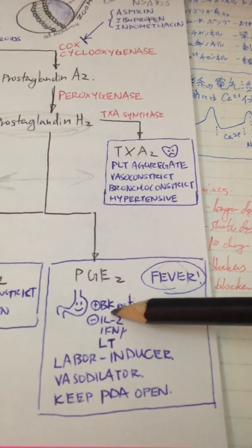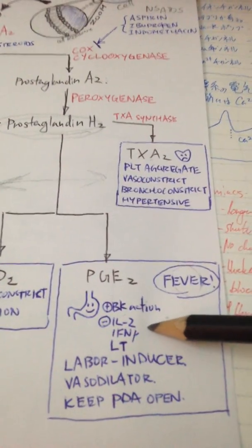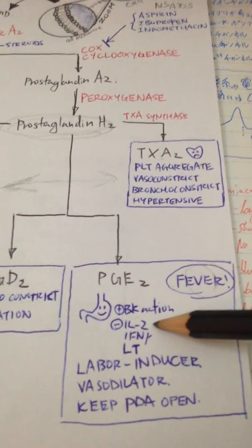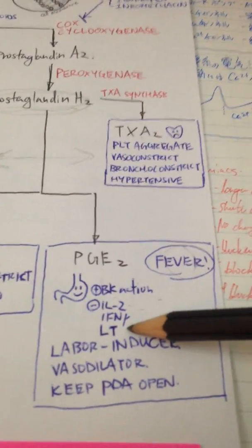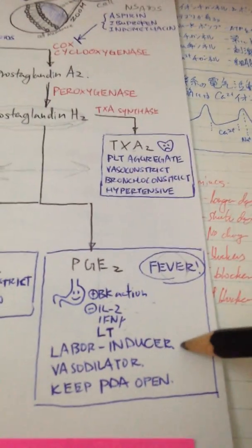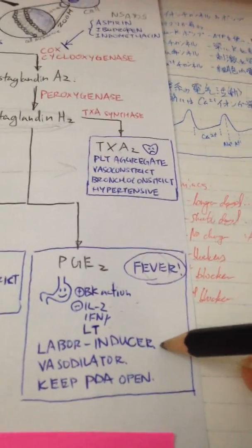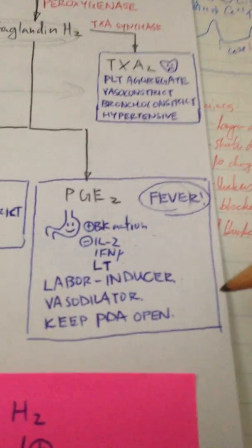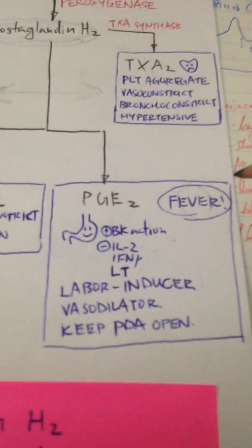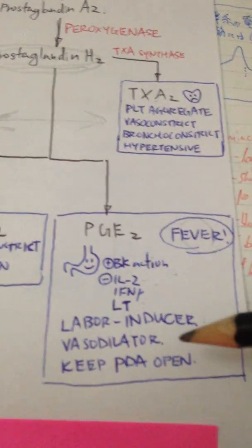PGE2 will enhance the bradykinin action and reduces the action of interleukin-2, interferon gamma, and leukotrienes. It's also a very potent labor inducer. You might have noticed if you've gone through obstetrics postings that doctors may use prostaglandin E2 to induce labor.